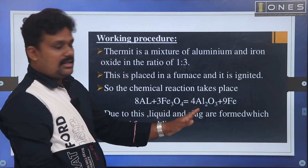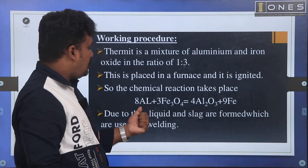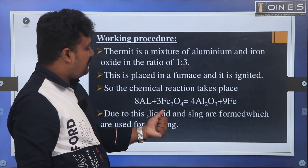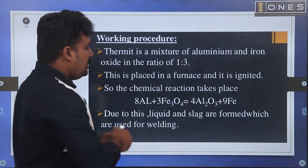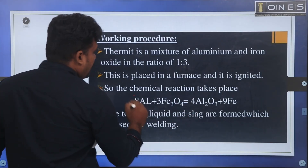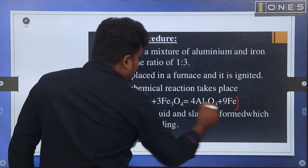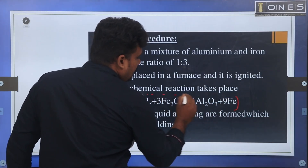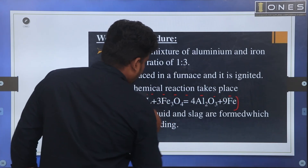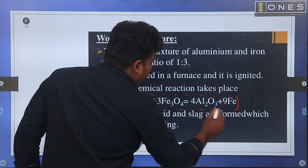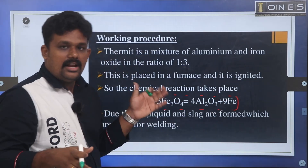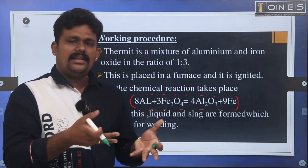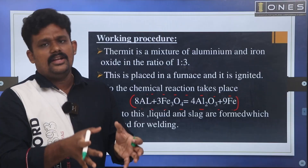Thermit mixture is a mixture of aluminum and iron oxide in the ratio of 1 to 3. The chemical reaction is: 8Al + 3Fe₃O₄ → 4Al₂O₃ + 9Fe. The reaction produces aluminum oxide and iron. The mixture of aluminum and iron oxide produces the heat required for welding.